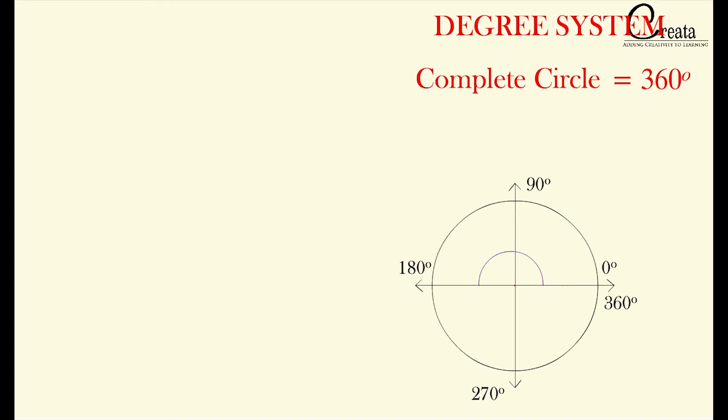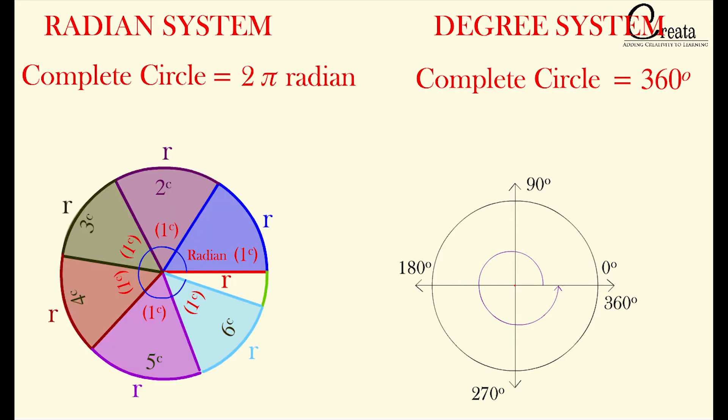In degree system, complete angle of a circle is 360 degree. Whereas in radian system, complete circle is 2 pi r, that is 2 pi radian, here r is a radian.